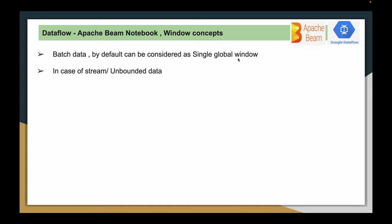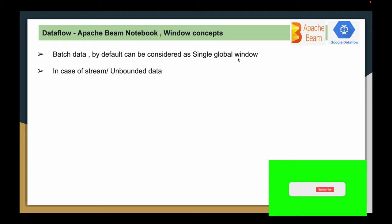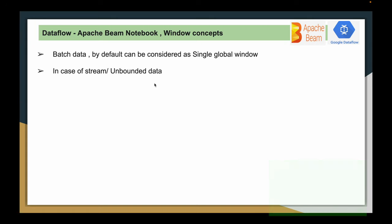Because you have all the elements already available in that window, it is a single window, and you can perform any type of PTransformation and get the required output. What happens in case of unbounded data or streaming data? Streaming means continuously coming data. In the PCollection at any given point of time, there won't be all the elements available since it is continuously coming data.